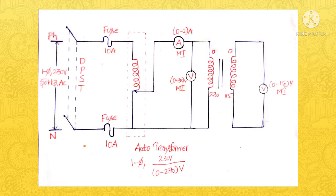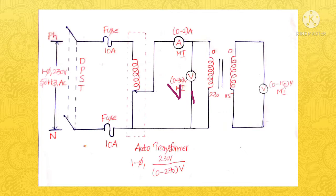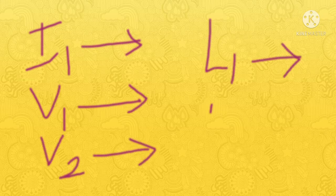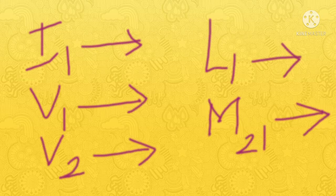We will consider the 230 volt side as the primary side and the 115 volt side as the secondary side. The voltage across 230V is the primary voltage V1, and the current flowing through the 230V side is I1, while the voltmeter connected across the 115V side measures the voltage V2. After finding V1, I1, and V2, we need to tabulate the readings. From these three values, we can find L1 and M21, for which we have already given the mathematical expressions. This is the first step.